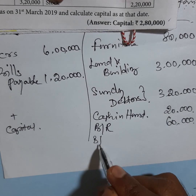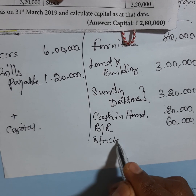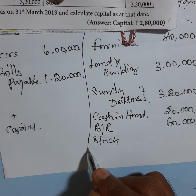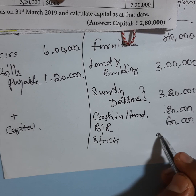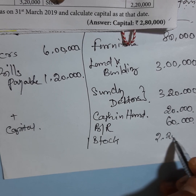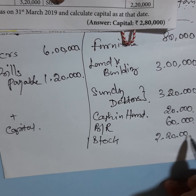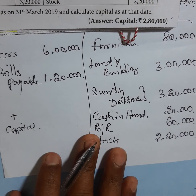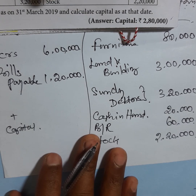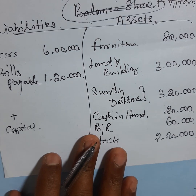Stock — opening stock — 2,20,000. So this information is all available. How do we get the balance?